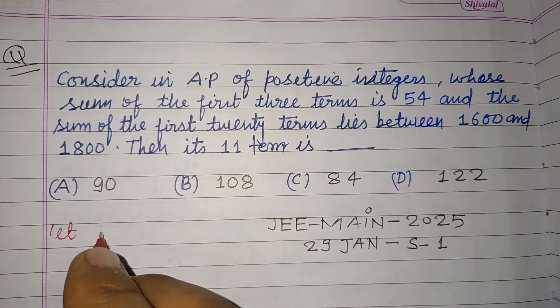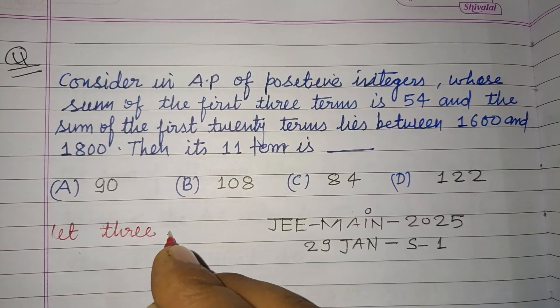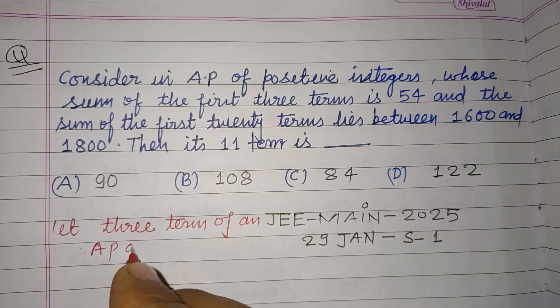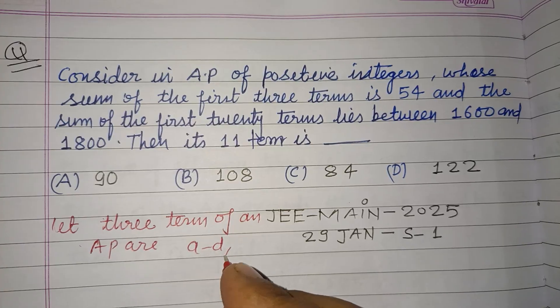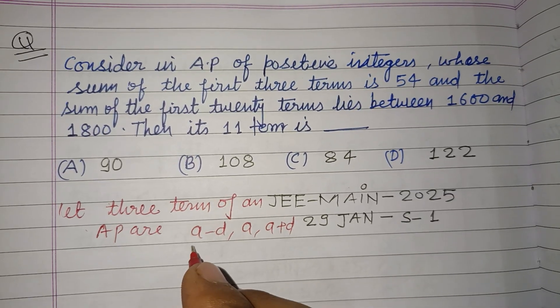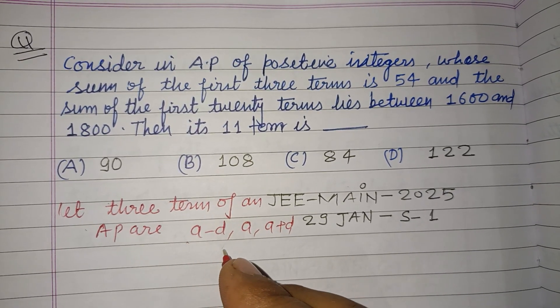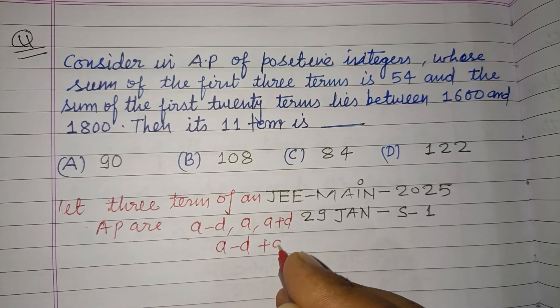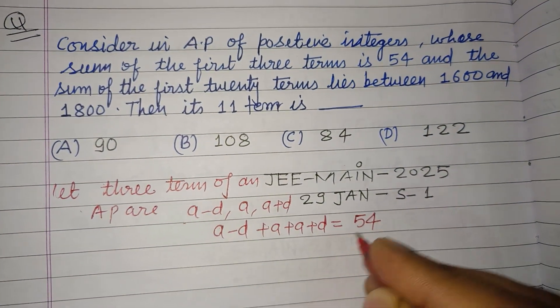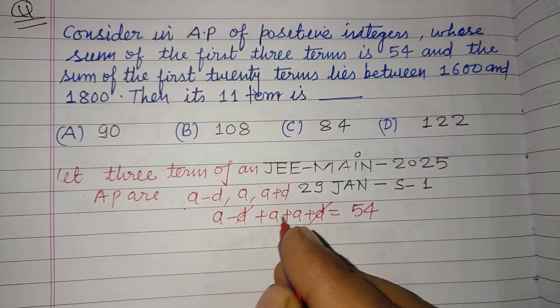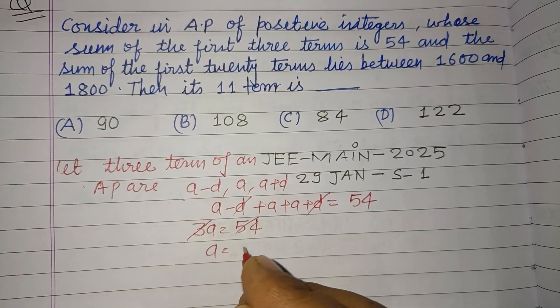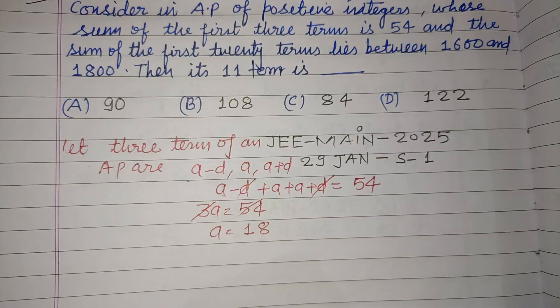So sum of the first three terms. Let three terms of an AP are A minus D, A, and A plus D. Sum of three terms is given: A minus D plus A plus A plus D, that is given to us 54. So D cancels, A, A, A. 3A equals 54. 3, 3, 3. It is 24. So A is 18 here.